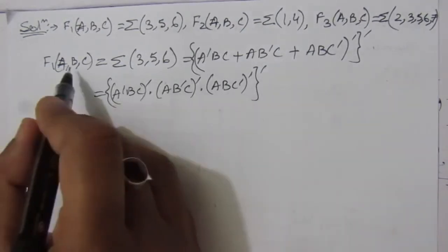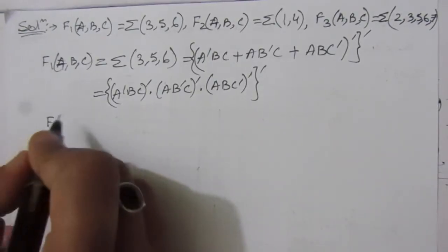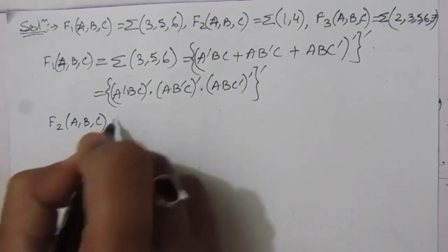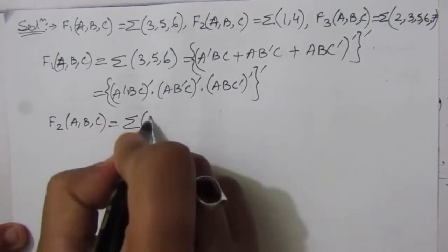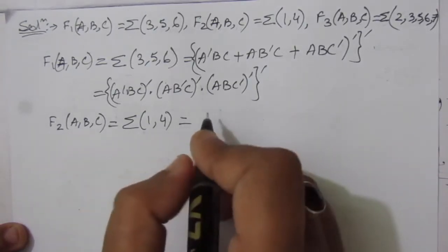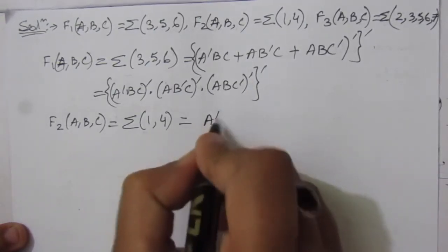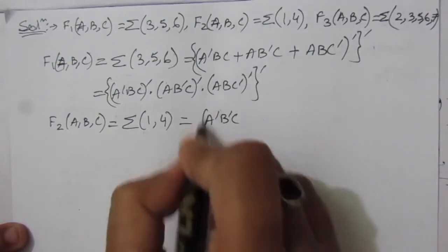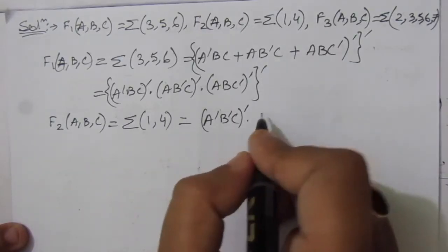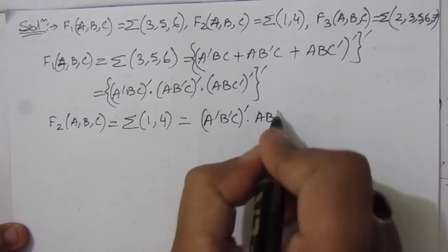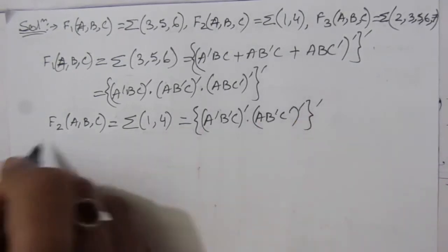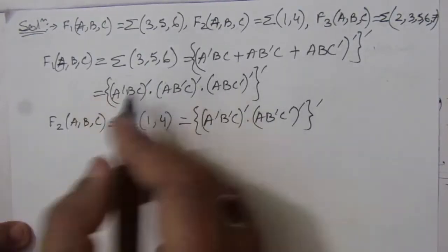Similarly, F2(A, B, C) = Σ(1, 4). We can write it as: minterm 1 = A̅B̅C and minterm 4 = AB̅C̅. Applying the same double complementation, we get: (A̅B̅C)' · (AB̅C̅)' — all complemented — and then an outer complement. This is the NAND expression for F2.